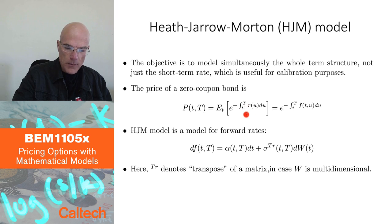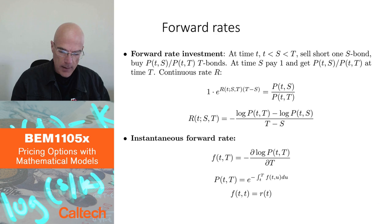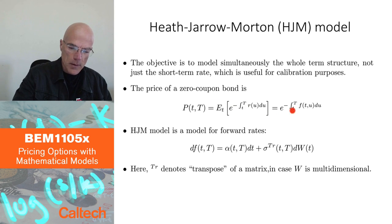And if you take the log and derivative, and you put capital T equal to small t, you will get that claim from the previous slide that f at small t, small t is short rate, r(t). Now, I'll let you look at that if you want to, otherwise we'll just take this as given. But it comes from these two relationships and taking derivatives and logs.